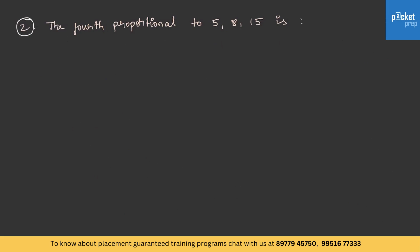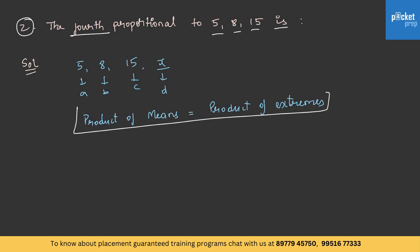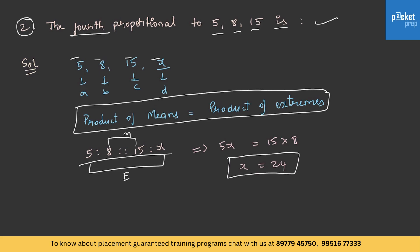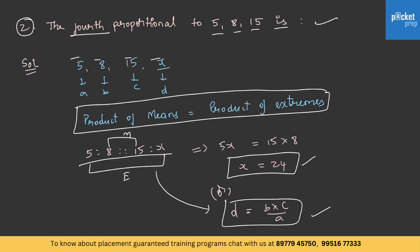Let us solve another question. The fourth proportional of 5, 8, 15 is — let us write 5, 8, 15 and take the unknown value as X, representing A, B, C, and D. If A, B, C, D are in proportion, then product of means equals product of extremes. So 5, 8, 15, and X are in proportion, giving 5X is equal to 15 into 8, and the value of X is 24. You can also directly use the formula D is equal to B into C by A, which gives the same result.